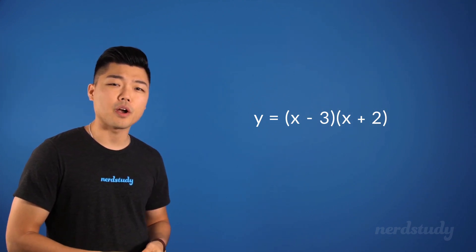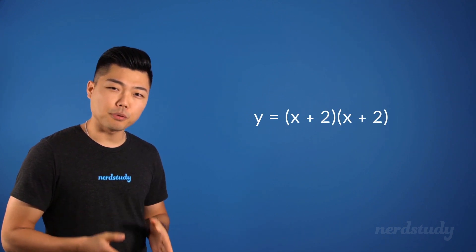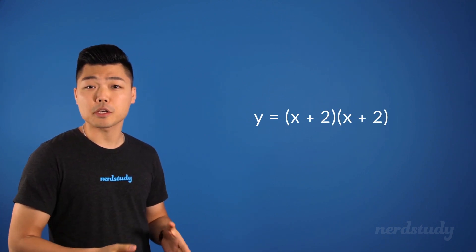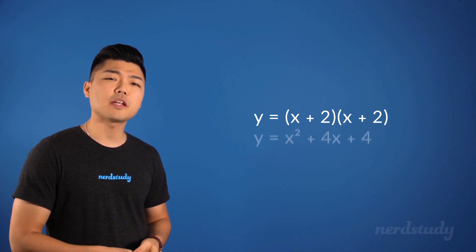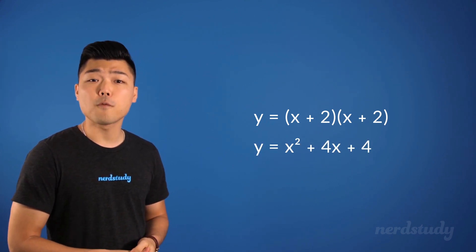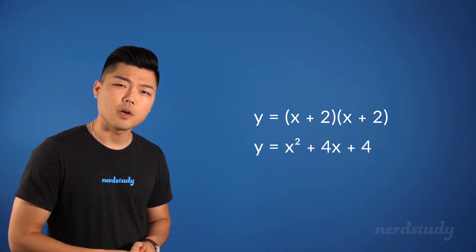But, in a situation where, let's say, the equation is x plus 2 multiplied by x plus 2, we'd get y equals x squared plus 4x plus 4.